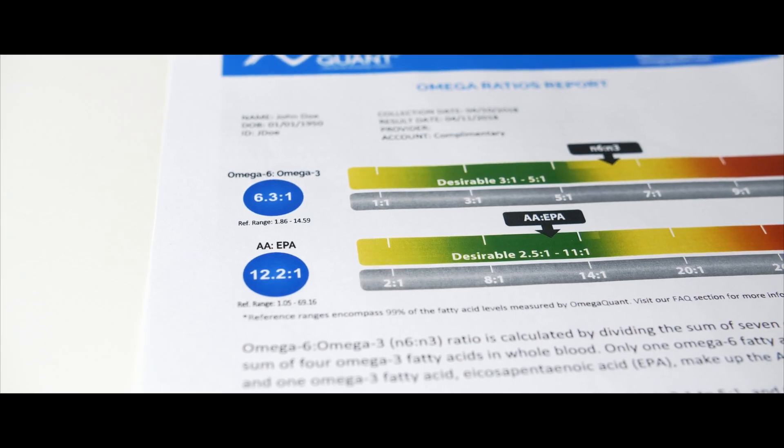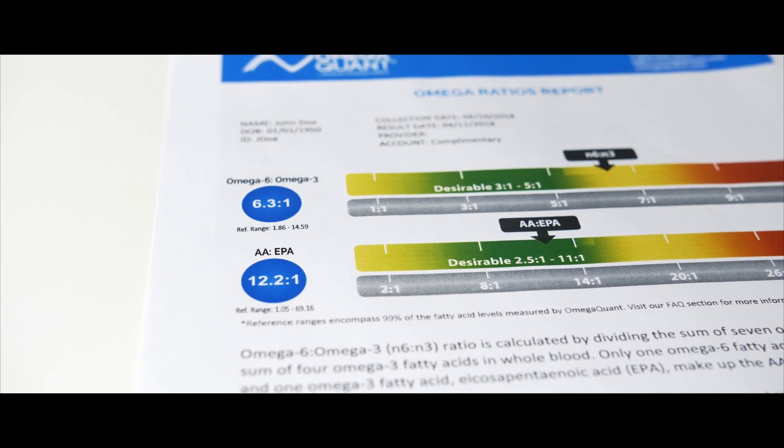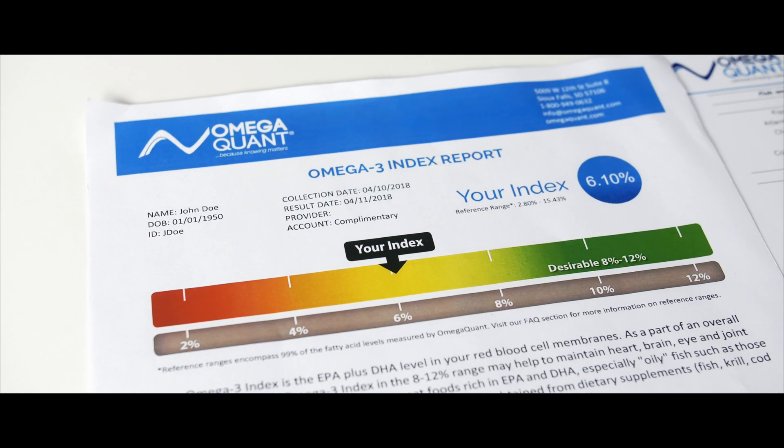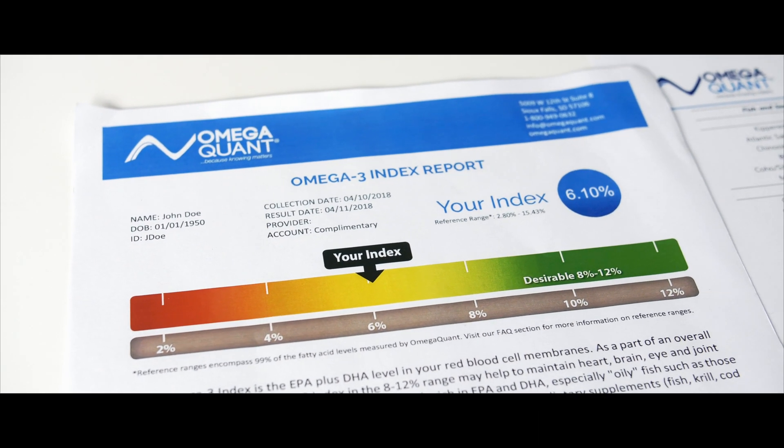And so for most people we recommend that they optimize the omega-3 side of their equation, which inevitably means also optimizing their omega-3 index and getting into the 8 to 12 range, and then looking at their ratios after they've optimized that side of the ratio.